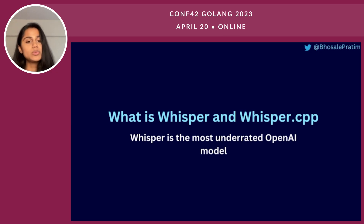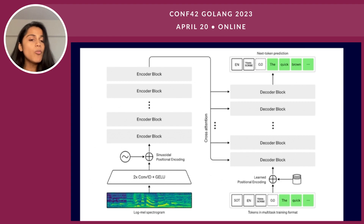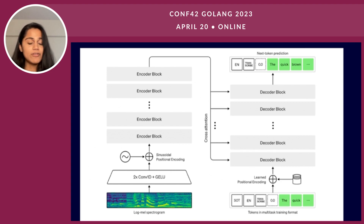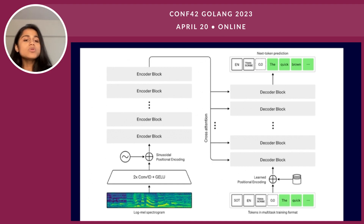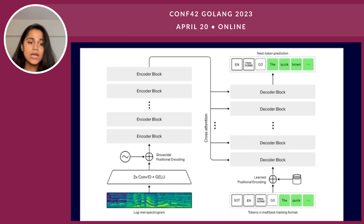So let's see what Whisper is and what Whisper CPP is. Whisper is an open source automatic recognition system developed by OpenAI. It has been trained on a vast amount of multilingual and multitask supervised data collected from the web. It is one of the most underrated models of OpenAI. Companies like Snap Inc., the creator of Snapchat, Shopify, and a lot of other companies are already using the Whisper API.